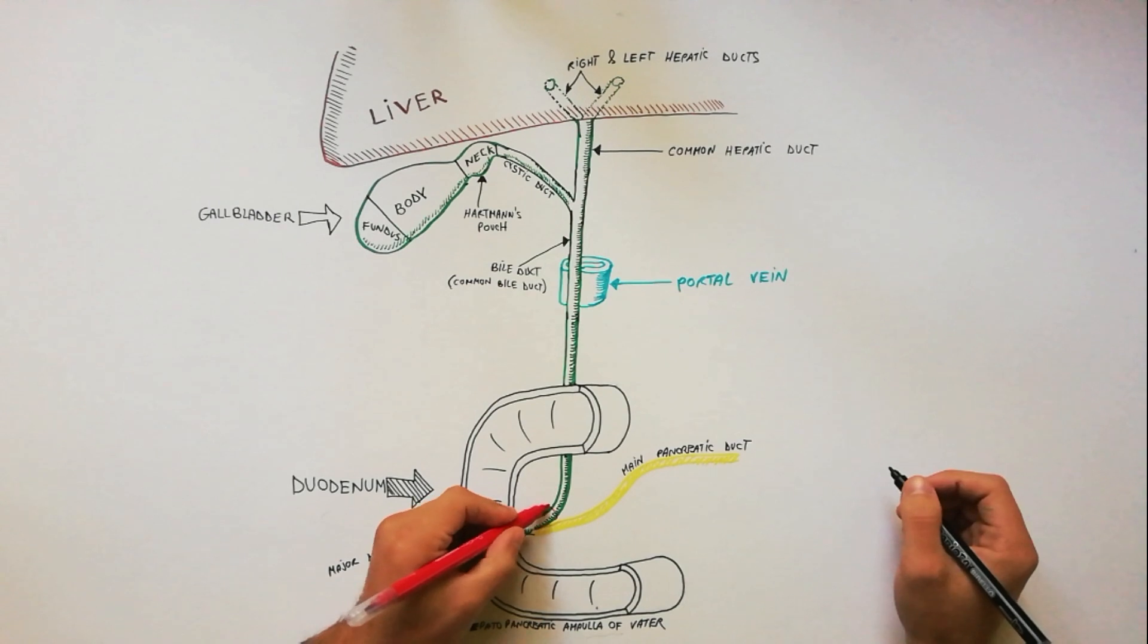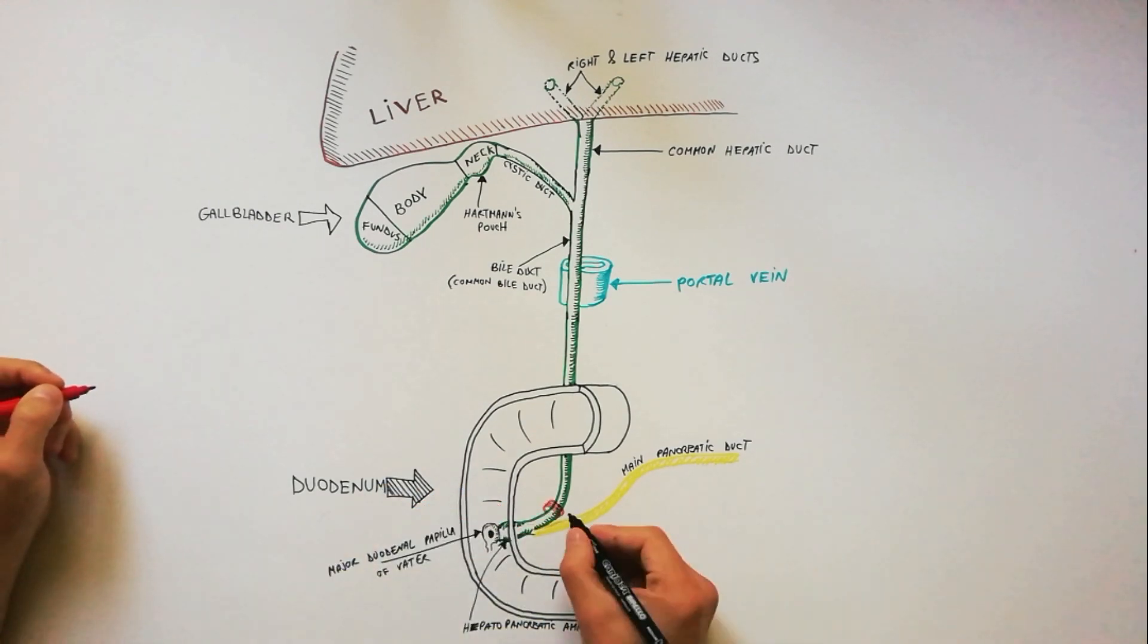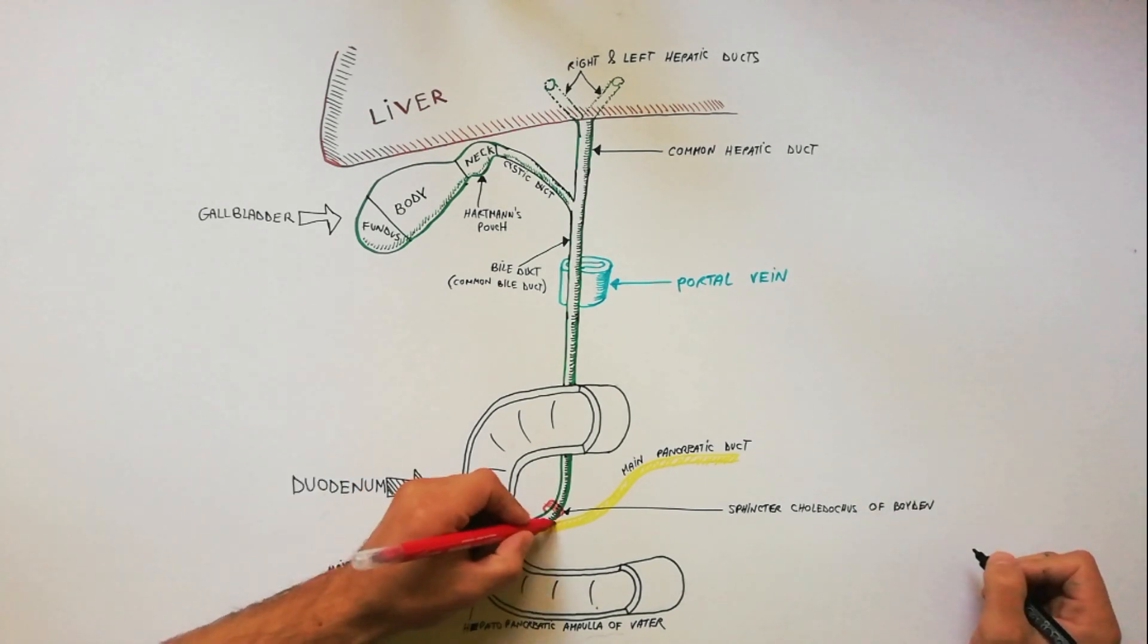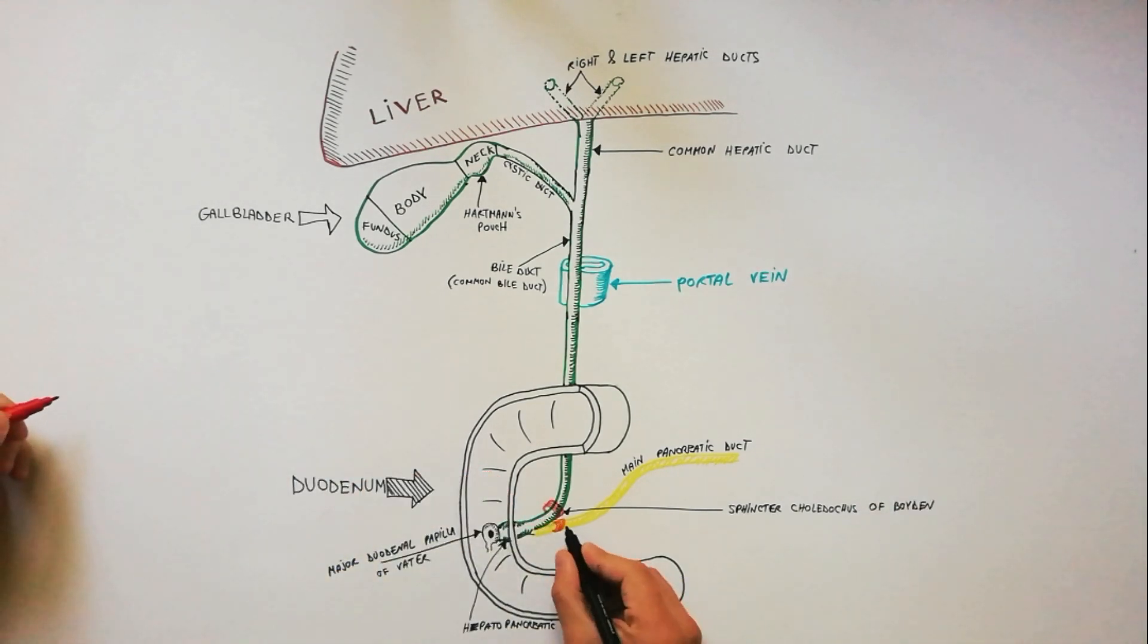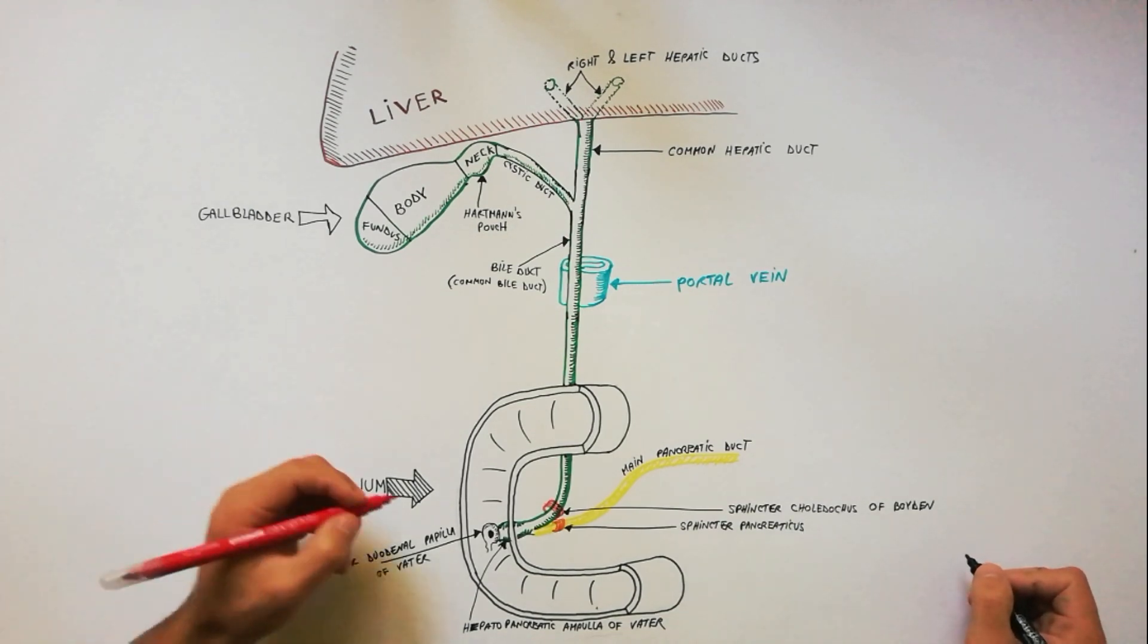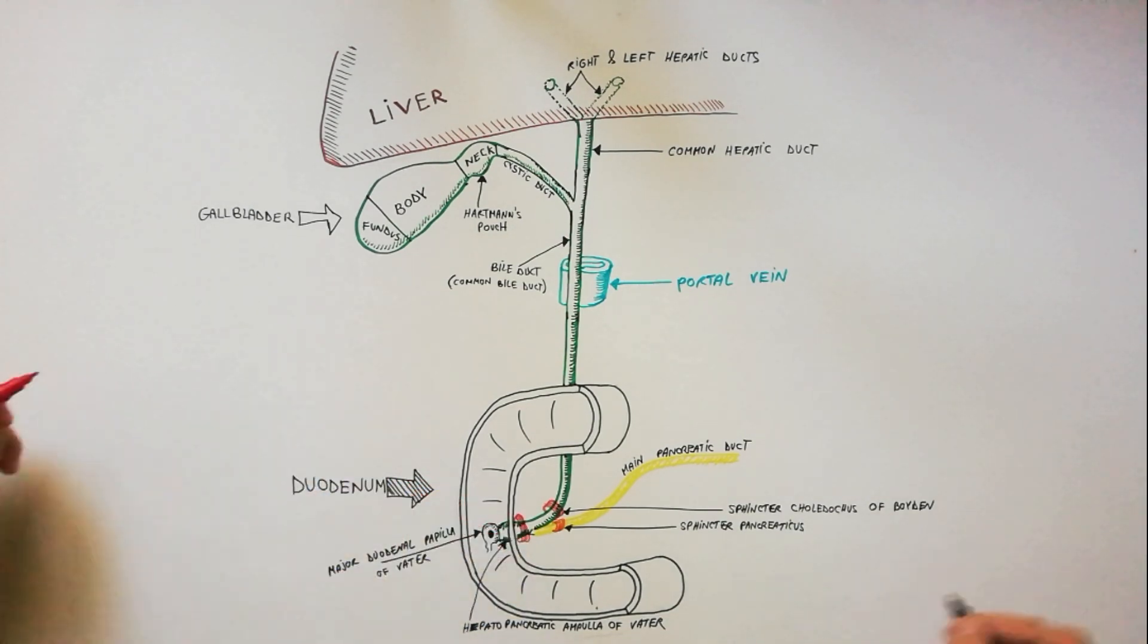The sphincter around the bile duct is called sphincter choledochus of Boyden. The sphincter around the pancreatic duct is called sphincter pancreaticus. And the sphincter around the ampulla is known as sphincter of Oddi.